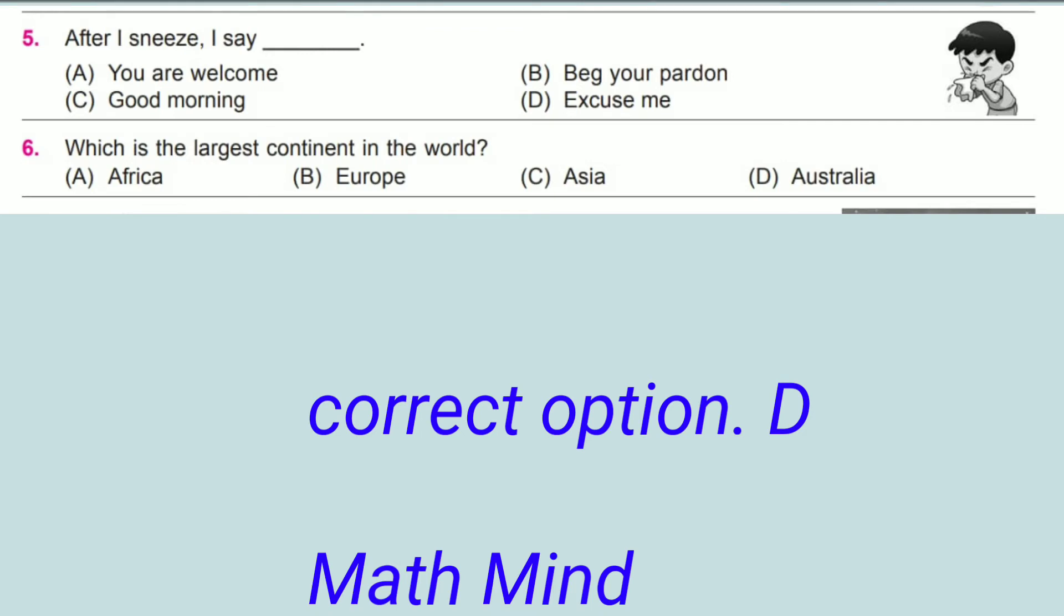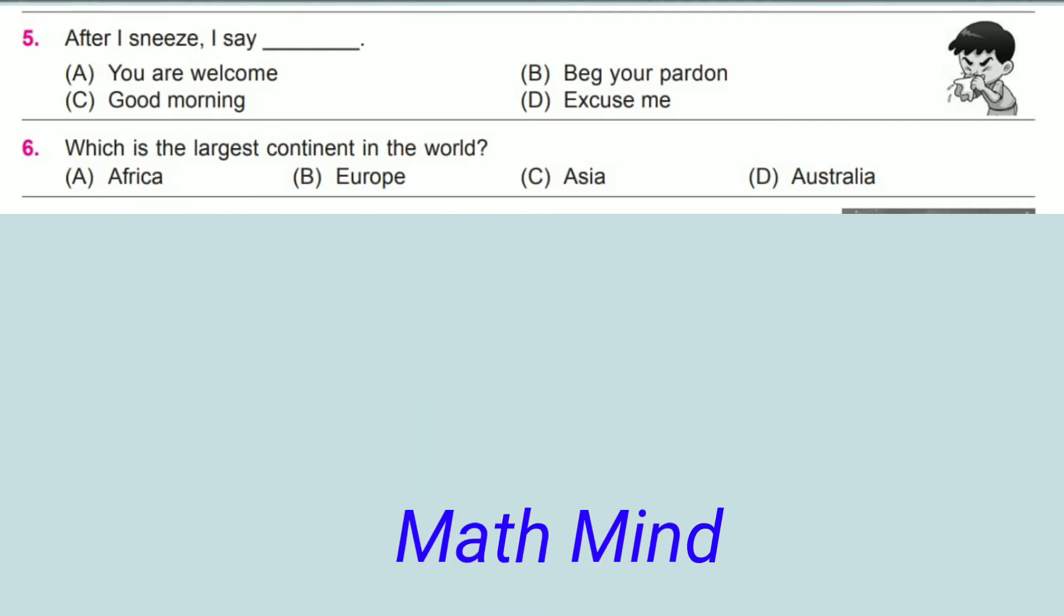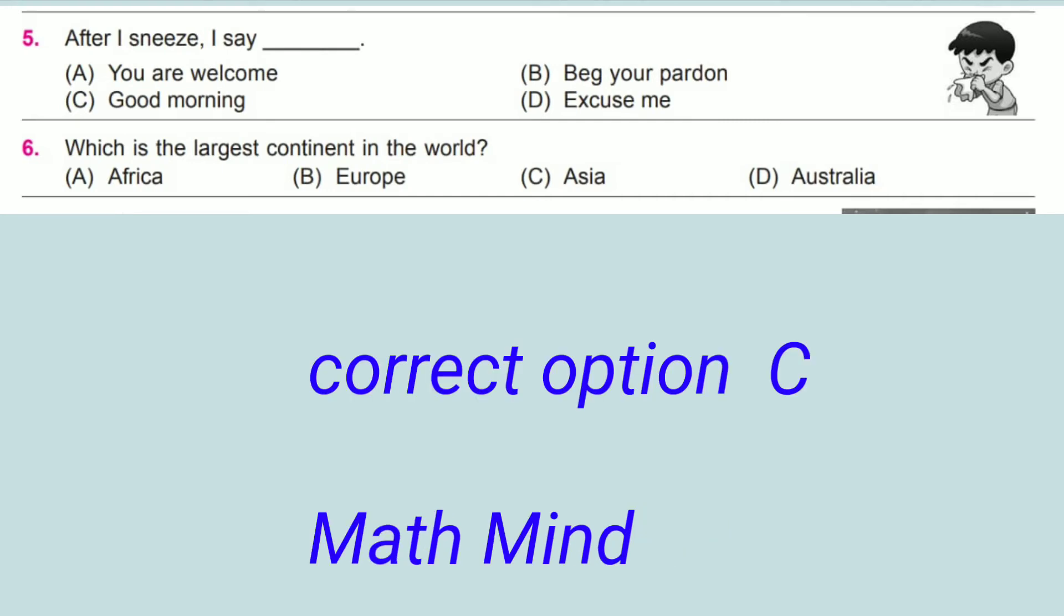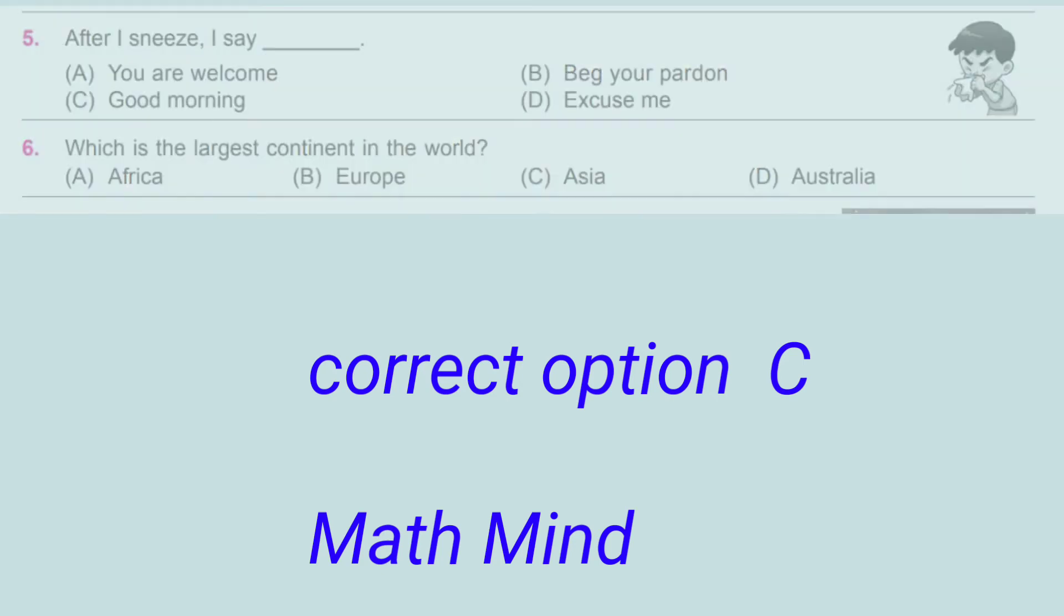Question number 6: Which is the largest continent in the world? It is option C, Asia. Asia is Earth's largest and most populous continent, located in the eastern and northern hemisphere of the Earth.